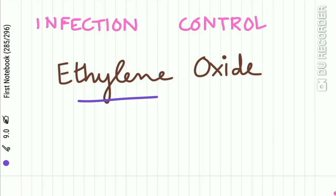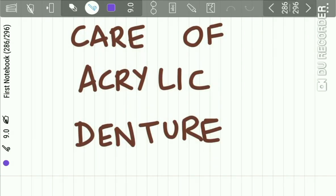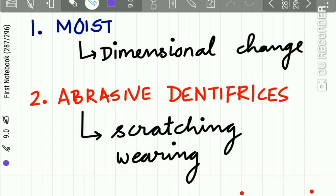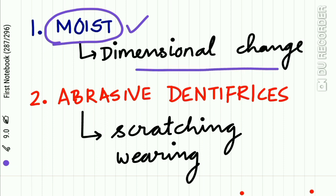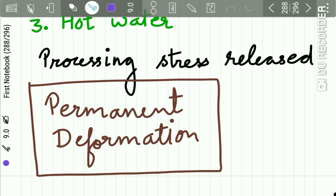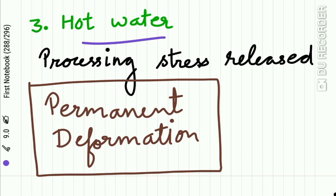Infection control of the denture can be done using ethylene oxide. For care of the acrylic denture: dentures should always be kept moist, because drying may result in dimensional change. Abrasive dentifrices should not be used for cleaning, as they may cause scratching and wearing off of the denture. Hot water should not be used for cleaning because it can release processing stresses, resulting in permanent deformation.